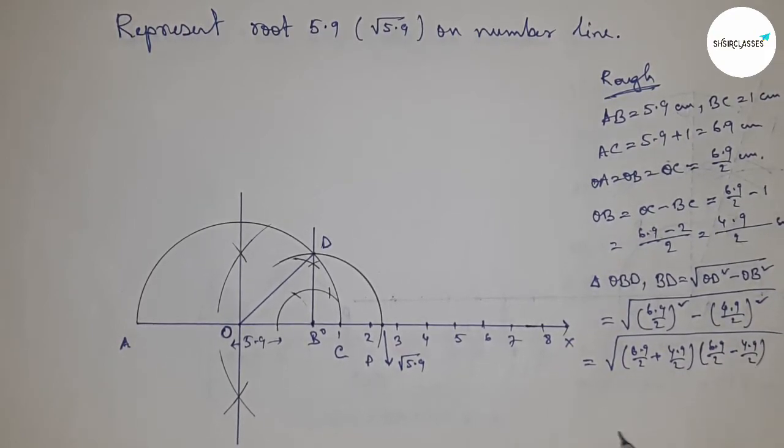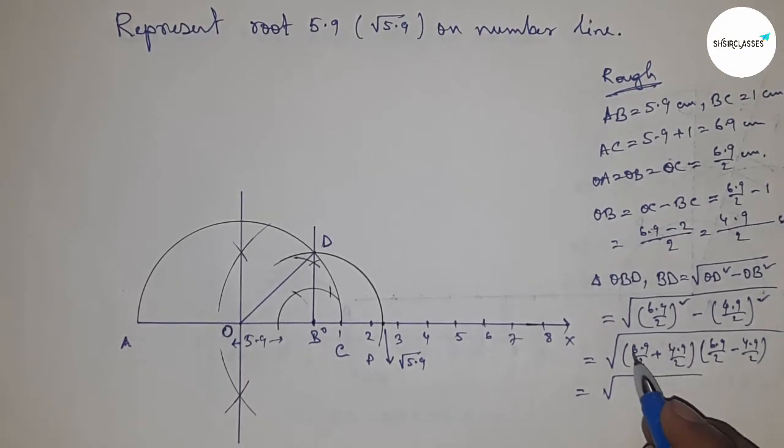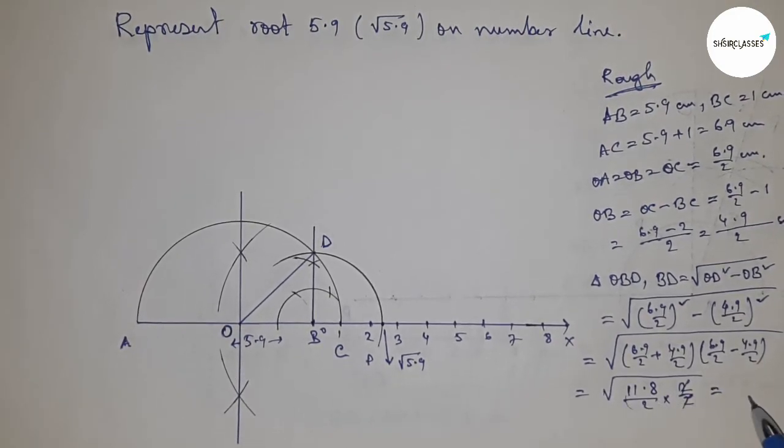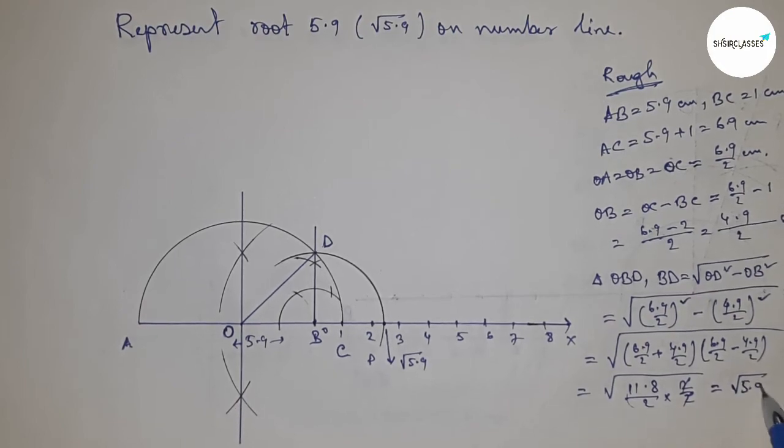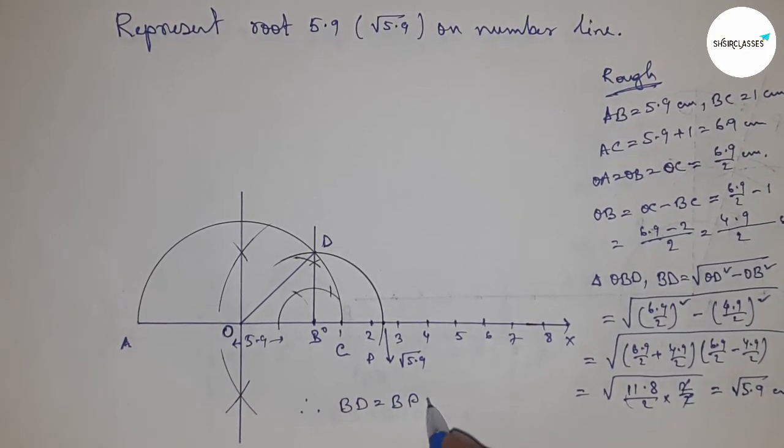From this we get 8 and 11, so 11.8 times 2 by 2. After cancellation, this is 5.9 centimeters. Therefore BD equals BP equals root over 5.9 centimeters.